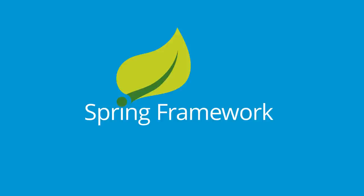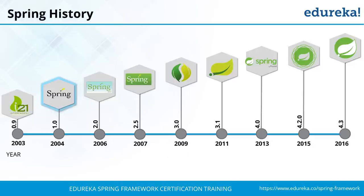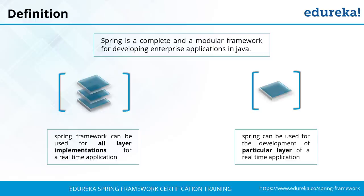Spring has been available on SourceForge since January 2003. It is an open source project introduced by Rod Johnson, with the first version released in February 2003. You can always browse spring.org to access APIs and documentation. Over the years, version 4.3, released in 2016, became one of the most widely used versions of Spring Framework.